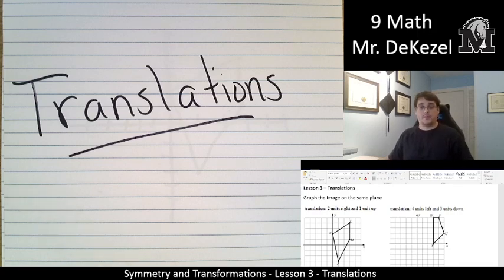Hello, grade 9 math class. Welcome back to another lesson. We have translations today. Translations just means moving points around a graph. So, translations equals moving points. That's what we're going to do.